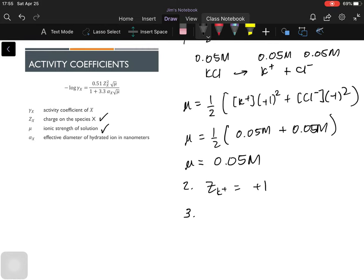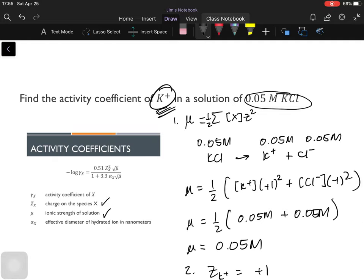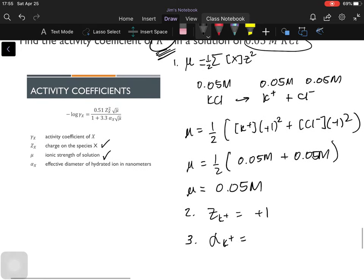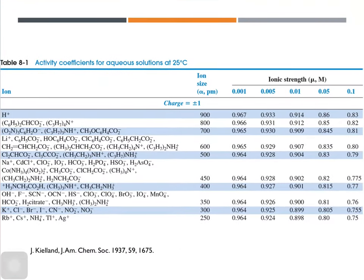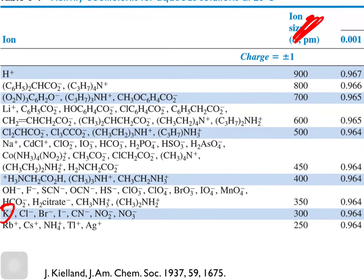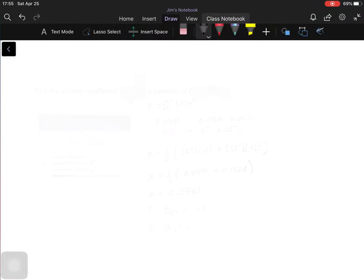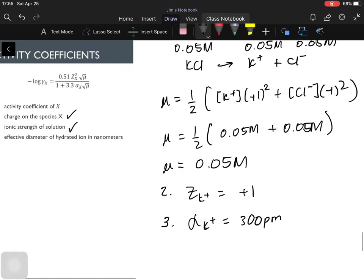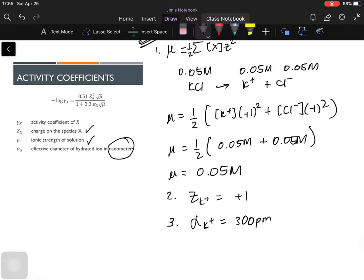Number three, we have to know the effective diameter of hydrated ion in nanometers. That means we're going to look for the hydrated ionic size of potassium plus, the ion of interest. So if this is not given, we can check the table to see what is the effective diameter. So looking at this table, we have potassium ion here, and the ionic size is 300. Take note, this is in picometers. So the ionic size is 300 picometers. However, the equation requires us to use nanometers, not picometers. So to convert picometers to nanometers, you just divide this by 1,000. This is 0.3 nanometers.